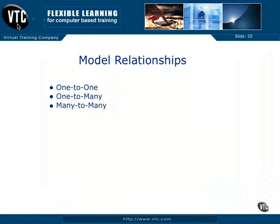In this video, we're going to look at model relationships and how they work in Ruby on Rails. Three specific relationships are one-to-one, one-to-many, and many-to-many. This directly corresponds to how your tables and your database relate to one another. We'll basically just cover these relationships so you understand them better, and in later videos we'll go into how to code these relationships inside your Rails models.